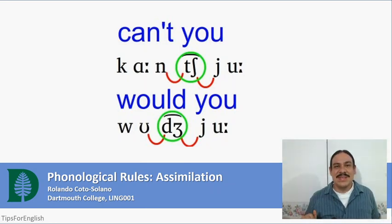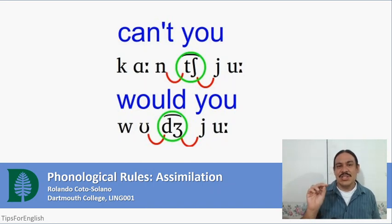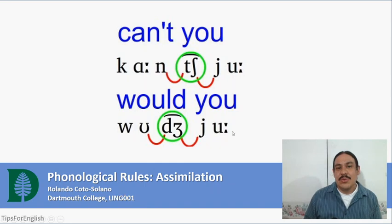Take a look at these two examples. In English, can't you and would you. Originally, these words have an alveolar T in contact with a palatal sound, the one at the beginning of you.